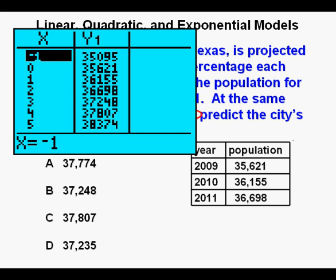We can go to the table view by pressing 2nd, then GRAPH. We see the first three years matching perfectly 2009, 2010, and 2011. So 2013 is going to be this year, year 4. And we find that answer here in answer C.